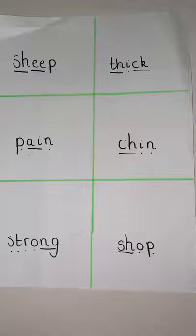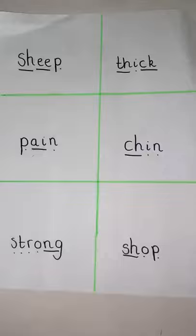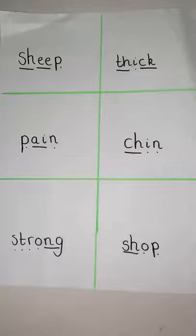Your parent will say a word. If you have the word on your sheet, you can cross it off. The aim of the game is to cross out all of your words, then you can shout bingo.